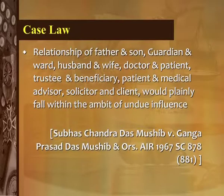Illustration: M, having advanced money to his son N during his minority, upon N's coming of age obtains by misuse of parental influence a bond from N for a greater amount than the sum due in respect of the advance. M employs undue influence. Case law: Relationships of father and son, guardian and ward, husband and wife, doctor and patient, trustee and beneficiary, patient and medical advisor, and solicitor and client would plainly fall within the ambit of undue influence.